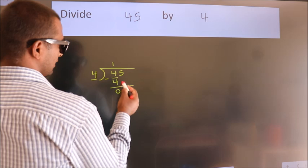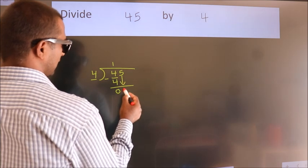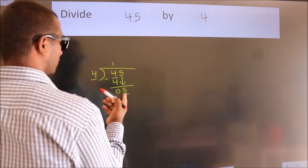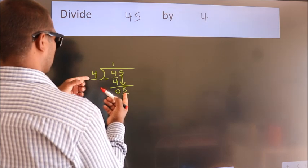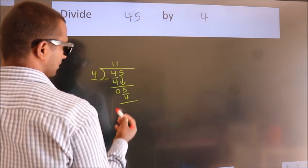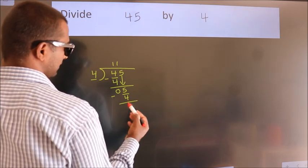After this, bring down the beside number, so 5 down. A number close to 5 in the 4 table is 4 once, 4. Now we subtract. We get 1.